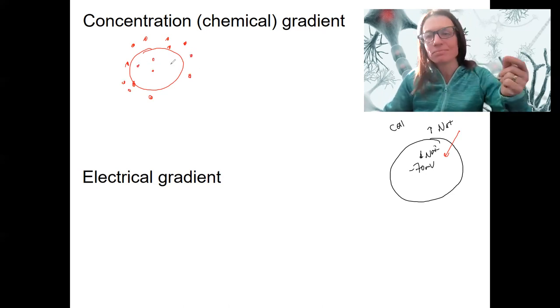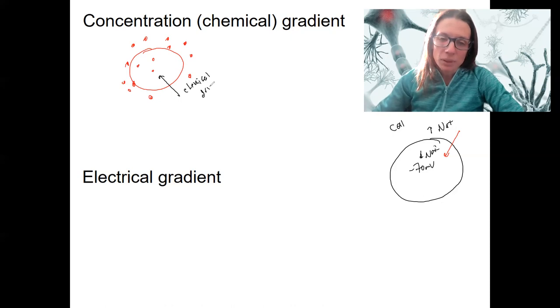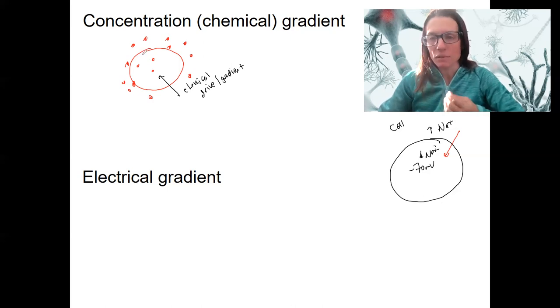For sodium in our cells, it is more outside. In that case, that creates a drive in. So the gradient is this way, into the cell. That is a chemical drive or gradient. The concentration piece of that is when there's more of something, anything, on one side versus the other.